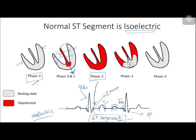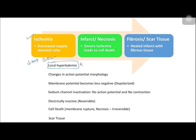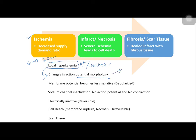Now let's see what happens to a ventricular myocyte and ST segment during ischemia. Ischemia refers to decreased blood supply — a decreased supply-demand ratio — causing a decrease in local ATP and oxygen, an increase in local potassium levels, and local acidosis. These changes — local hyperkalemia and acidosis — alter the properties of the ion channels involved in action potential generation, changing the action potential morphology. This initially causes a change in T wave morphology, which is the first ECG change seen in myocardial ischemia.